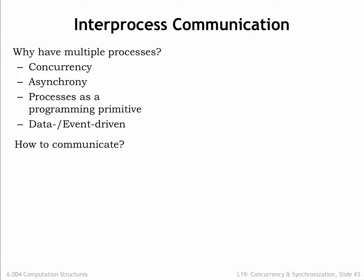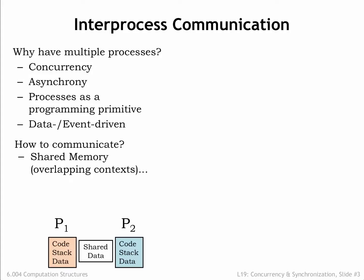How should the processes communicate with each other? If the processes are running out of the same physical memory, it would be easy to arrange to share memory data by mapping the same physical page into the contexts for both processes. Any data written to that page by one process will be able to be read by the other process. To make it easier to coordinate the processes communicating via shared memory, it's convenient to provide synchronization primitives.